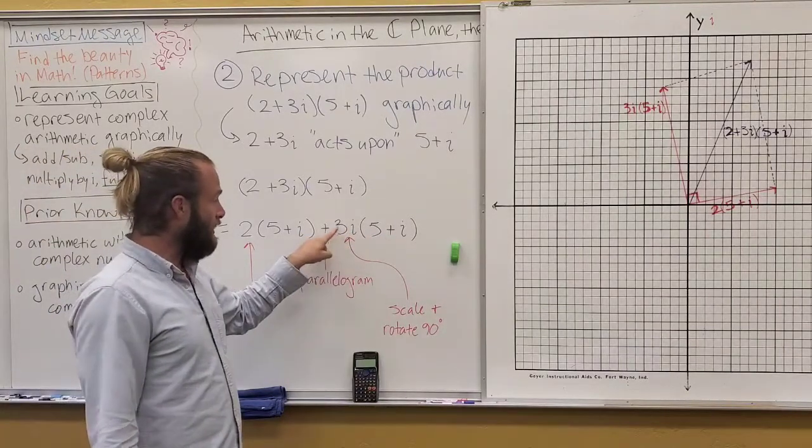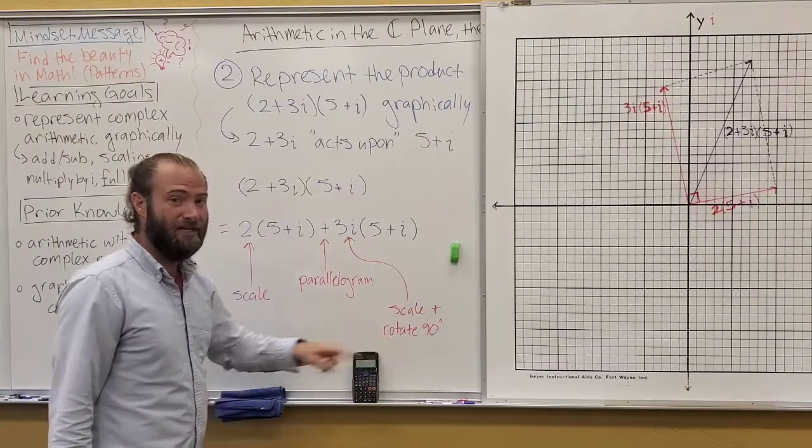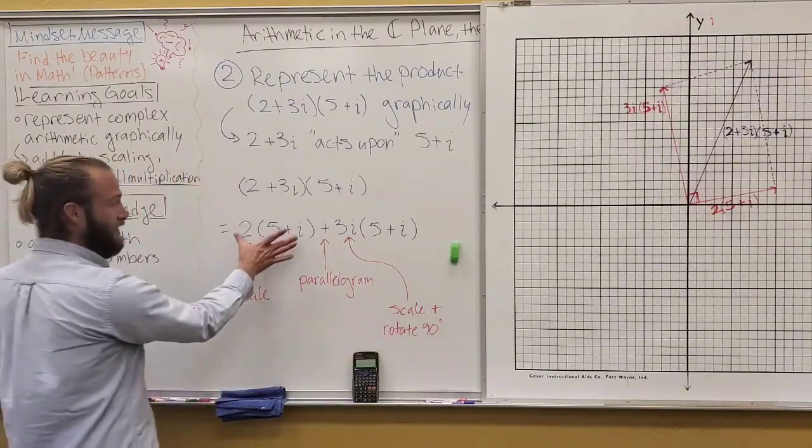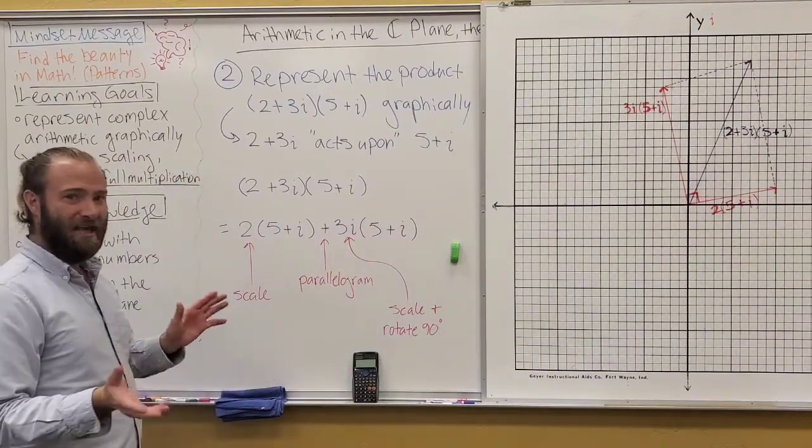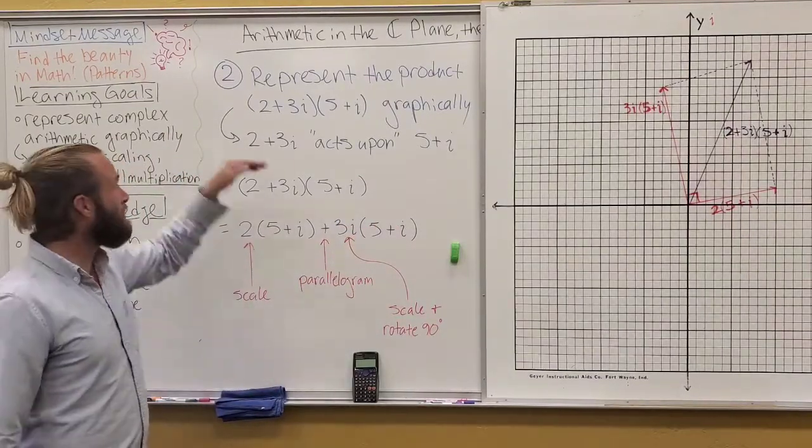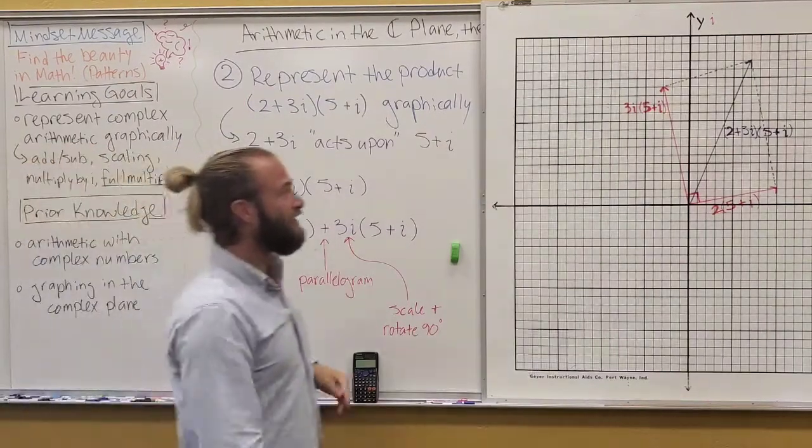Here, if we're multiplying 3 and i, it has a scaling and it's been rotated by 90 degrees. So, essentially, we're taking this vector and this vector and adding them, and that result will end up being the product I was looking for in the first place. Let's jump over here and see.